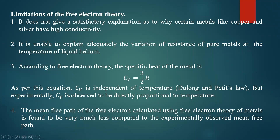But experimentally, Cv is observed to be directly proportional to temperature. As temperature increases, the specific heat of the metal also increases. There is a discrepancy between this theoretical specific heat explanation and experimental observation — no perfect agreement between the two. That is why, in the explanation of specific heat, the free electron theory fails.